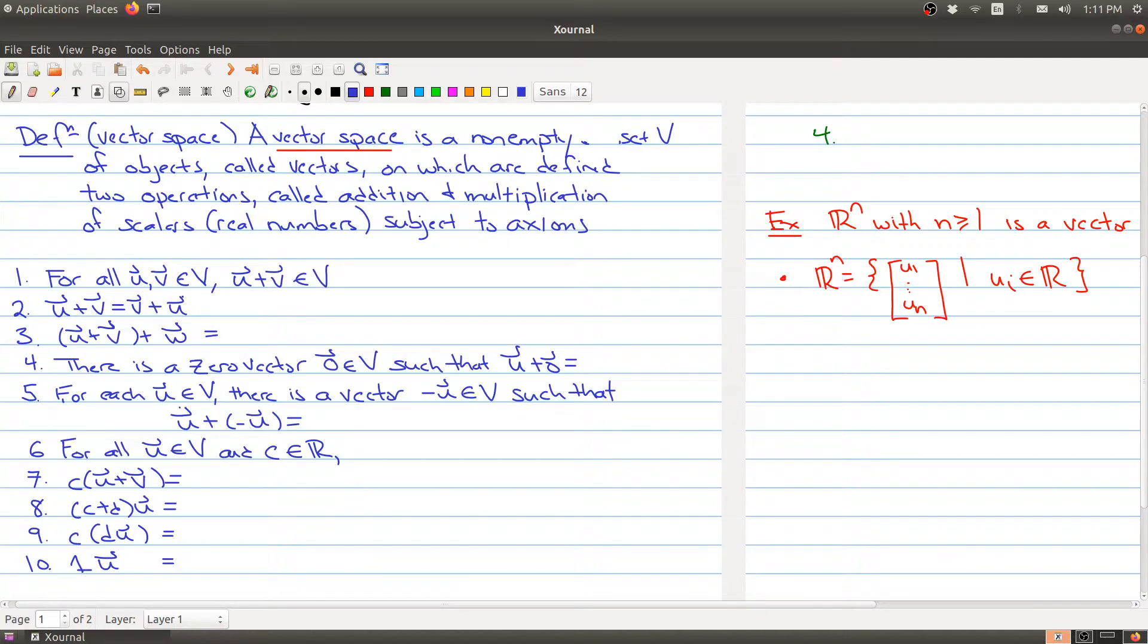The third condition is an associative property. So it's telling you if you have three things, the order in which you add them doesn't matter in the following sense that this is the same thing as first adding V and W together and then adding it to U.